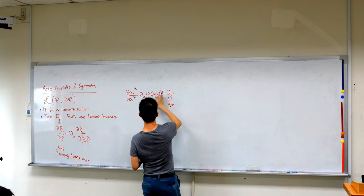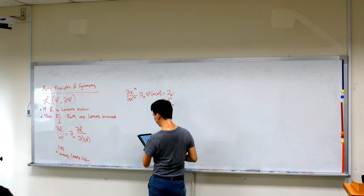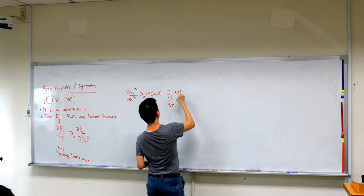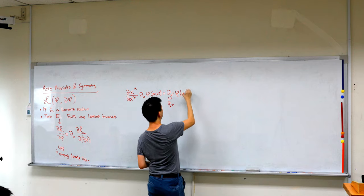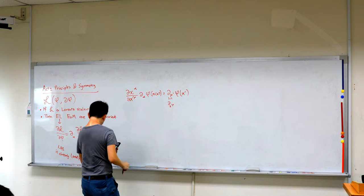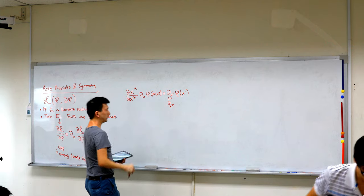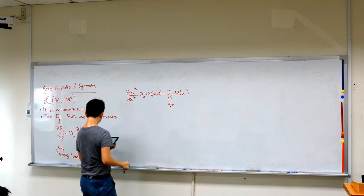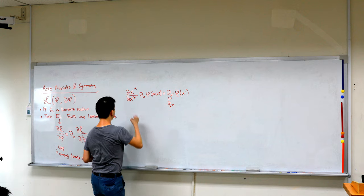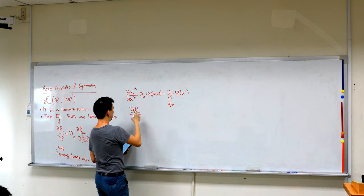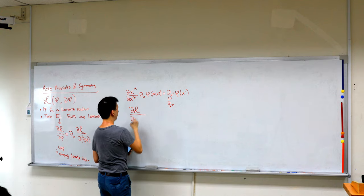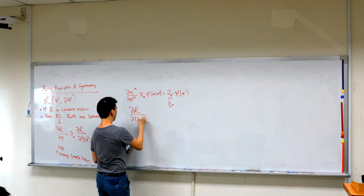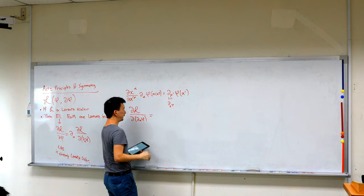If I substitute all the definitions for x in terms of x-prime, this becomes partial mu-prime of phi of x-prime. So we certainly know how the derivative transforms. Now let's ask: how does the derivative of the Lagrangian itself transform? Since L is a scalar, it's basically a chain rule — you treat the argument as a variable.